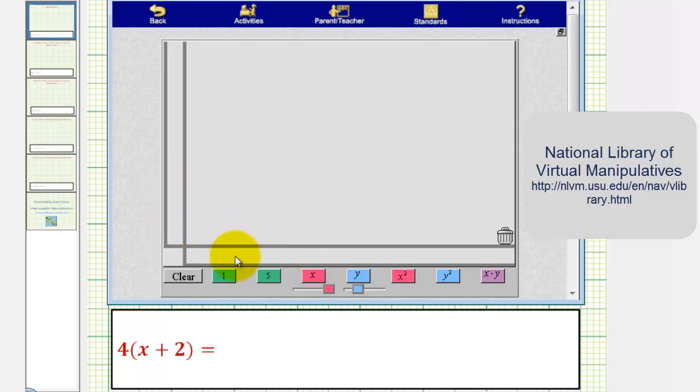So to model four vertically, we'll use four one tiles, and to model x plus two horizontally, we'll use one x tile and two one tiles.